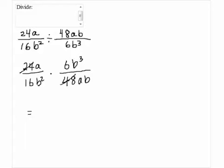24 and 48 have 24 in common. So 24 divided by 24 is 1, and 48 divided by 24 is 2. And 6 and 16 can be divided by 2. So 6 divided by 2 is 3, and 16 divided by 2 is 8.